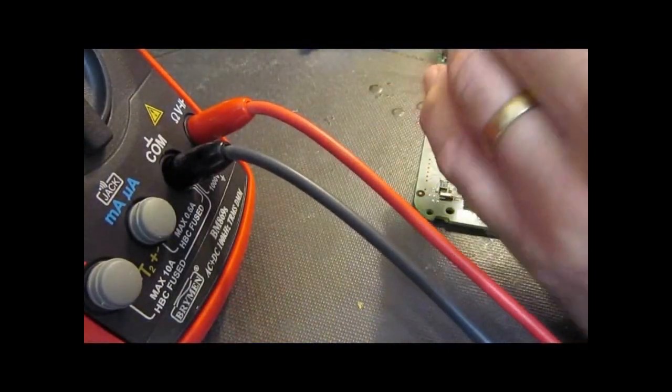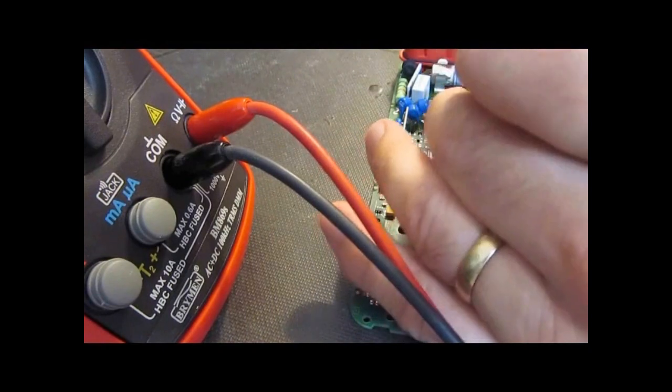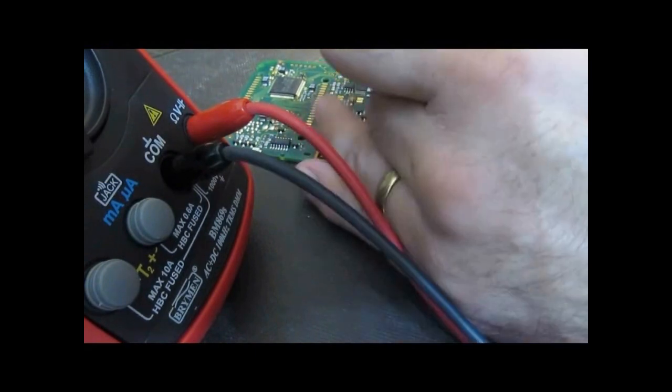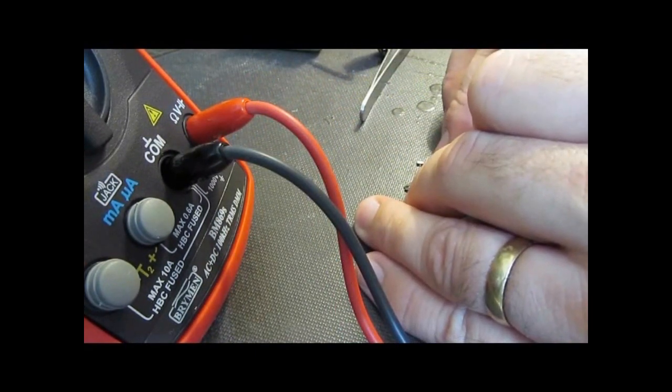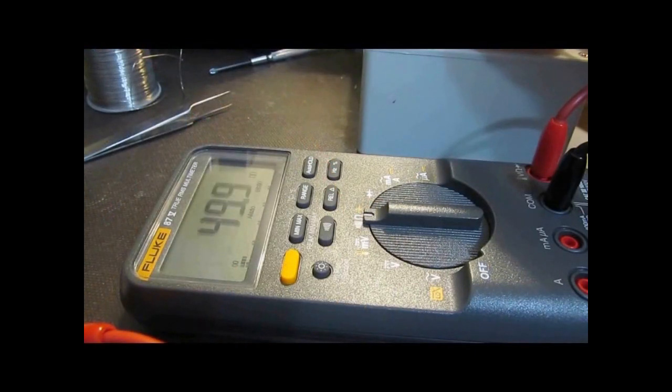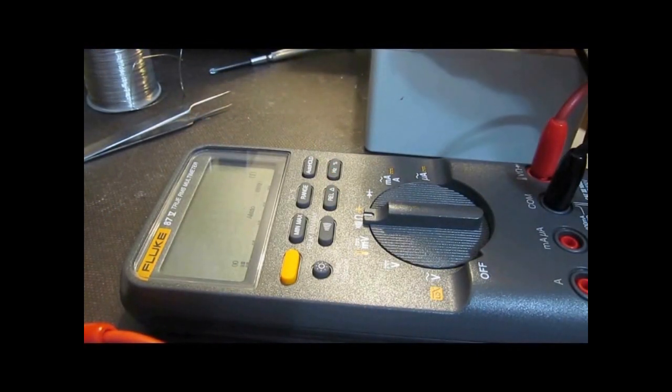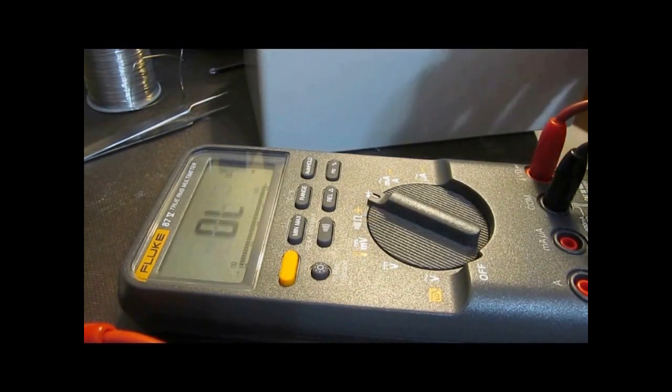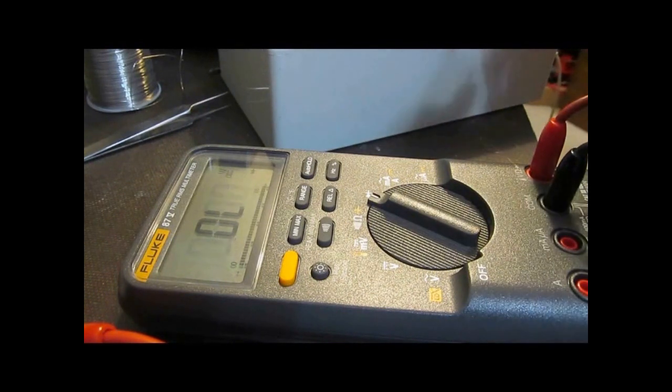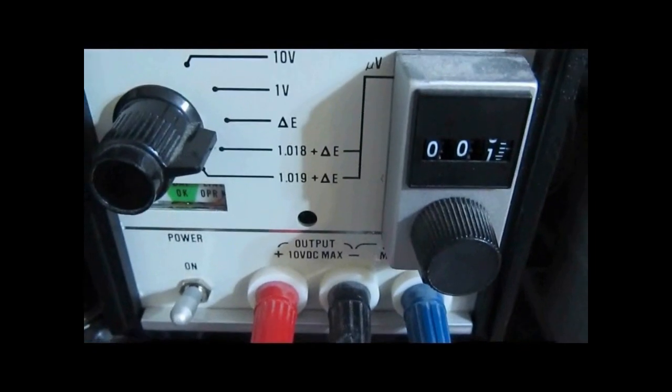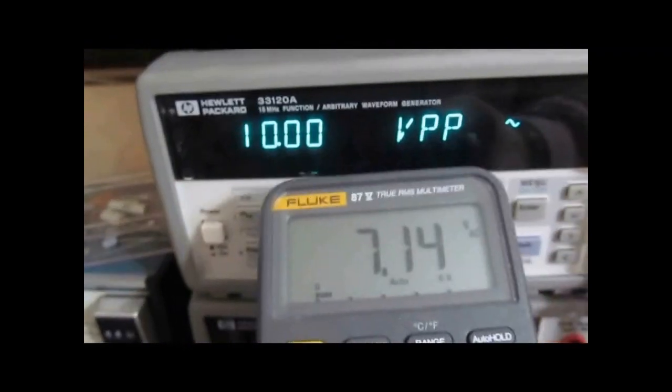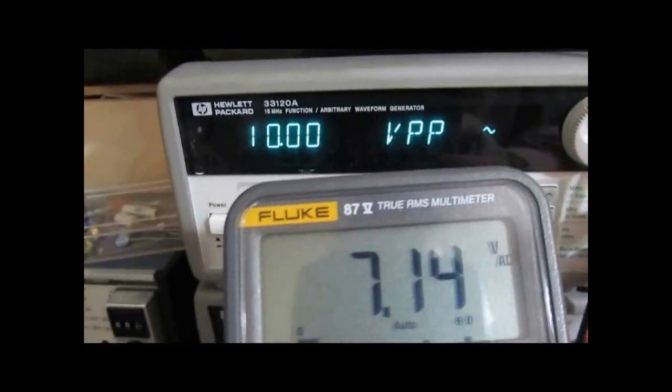We'll use the Brymen here to try to troubleshoot the 87V. Hopefully it's just a diode. Testing 50 ohm, 100 ohm, 100 nanofarad, diode check - looks good. Here we're supplying one millivolt. I didn't think it would ever fail at 1.5 kV, but that seems to be the case. Unreal.